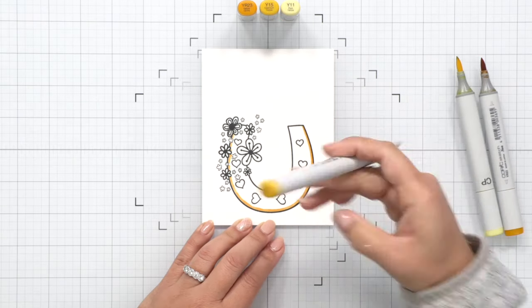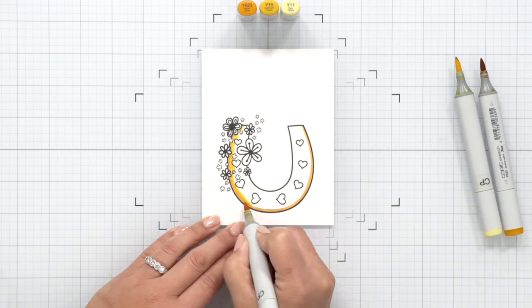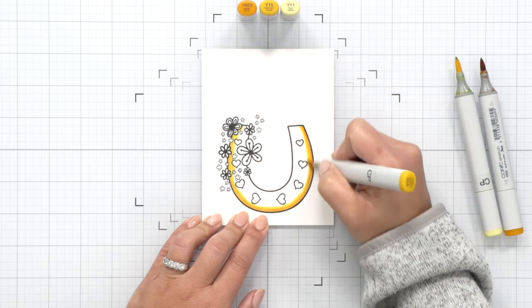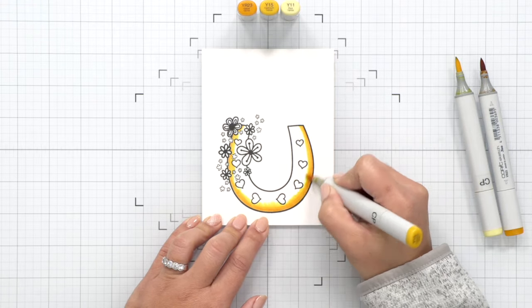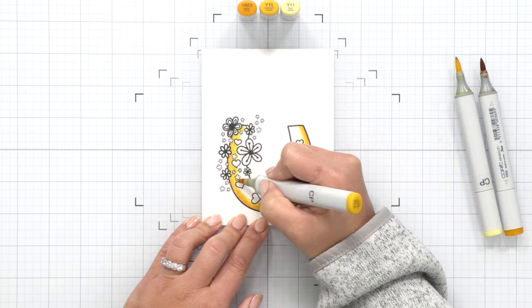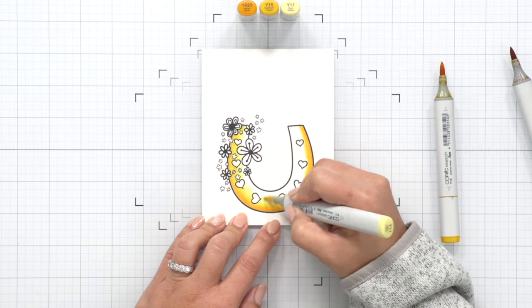The horseshoe I'm going to be coloring a goldish color so I'm using YR23, Y15, and Y11 and I also then bring in Y00 because once I got to the center of the horseshoe I decided that I needed a tad more contrast and a bit more color.